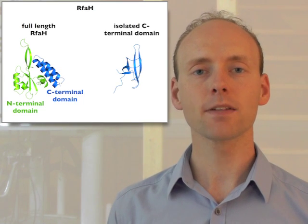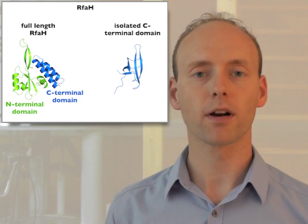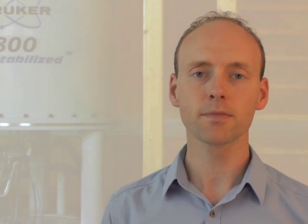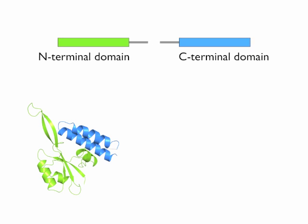Remarkably, we found that the isolated RFAH C-terminal domain consists of a five-stranded beta barrel, which is virtually identical to that of NASg. This suggests that the C-terminal domain refolds when the domain interface is disrupted during RFAH recruitment to the elongation complex. But does refolding also occur in the full-length protein? To answer this question, we used an RFAH variant with a TEV-protease cleavage site engineered into the inter-domain linker and analyzed it by NMR spectroscopy.